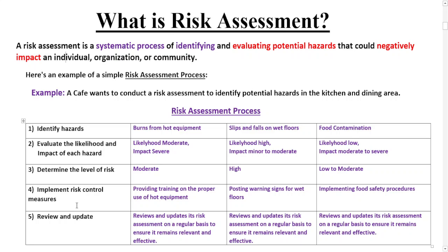Then you determine the level of risk, implement different risk control measures, and finally review and update the risk assessment on a regular basis to ensure it remains relevant and effective. The goal of a risk assessment is to determine the likelihood and impact of a potential hazard and then implement measures to minimize or control the possible risk that organizations, individuals, or communities are exposed to.